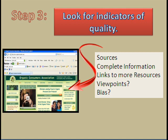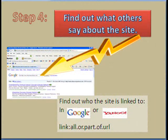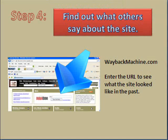Find out what others say about the site. Go to Google or Yahoo, find the search box, and type link: then paste the URL. This will bring up other sites that are linked to the site in question. Look at the variety of sites — are they reliable? Use WaybackMachine.com to discover what the site looked like in the past. Do you trust what you find?